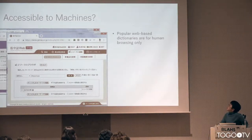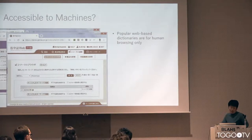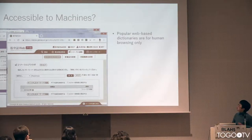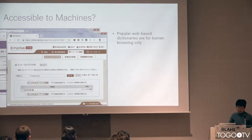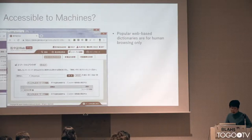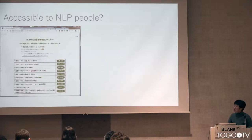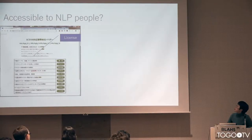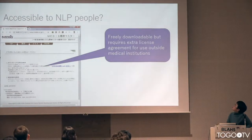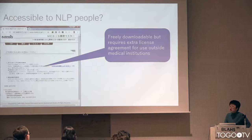There are some dictionaries available for free on the web, but mostly they are for humans. You input the word you are looking for into the search window, and they return a definition in natural language text — it's not formal semantics — and they don't allow downloading. Even when they allow downloading, there is a special license that says freely downloadable but requires an extra license if used outside the medical institution. So it's for doctors only, not for natural language processing people.